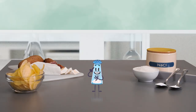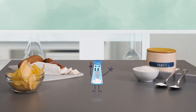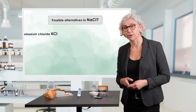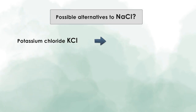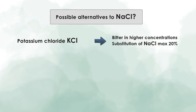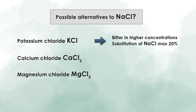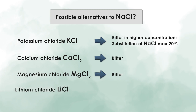Scientists and product developers have tried to substitute sodium chloride with potassium chloride in several products. The problem is that potassium chloride tastes bitter, so we can only substitute up to approximately 20% of sodium chloride with potassium chloride. Substitution with calcium chloride or magnesium chloride is also not possible, as they also taste bitter. And substitution by lithium chloride is not an alternative at all, as it is toxic to humans.